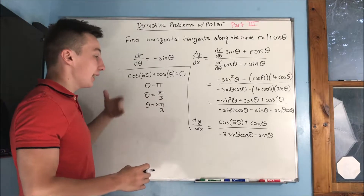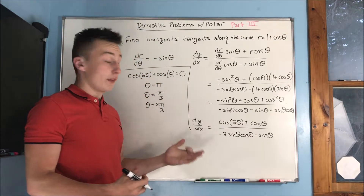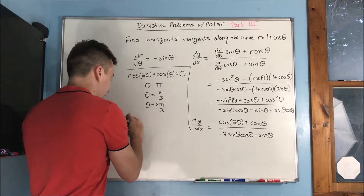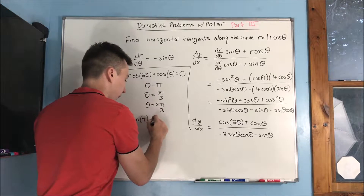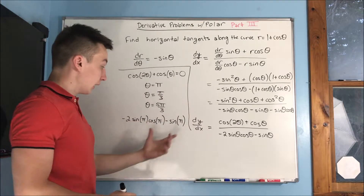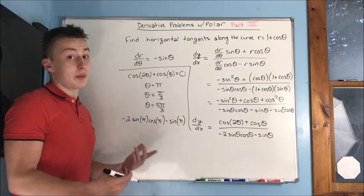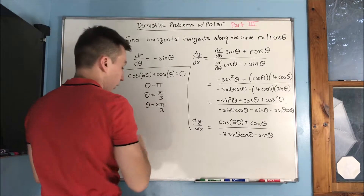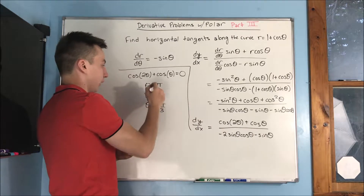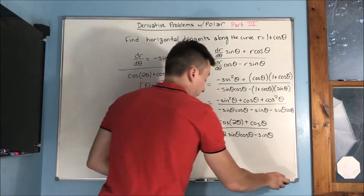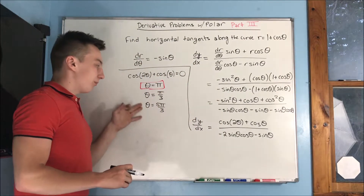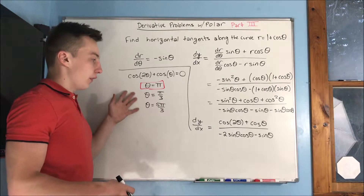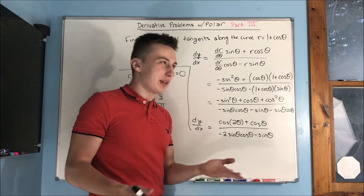Now we need to test these values in the denominator to make sure they don't make the denominator zero as well. Testing theta equals pi: negative two sine of pi times cosine of pi minus sine of pi. Since sine of pi is zero, the denominator is zero at theta equals pi, so we have to check that separately.